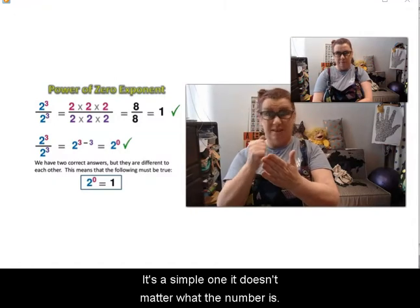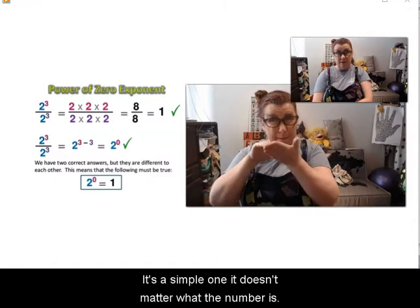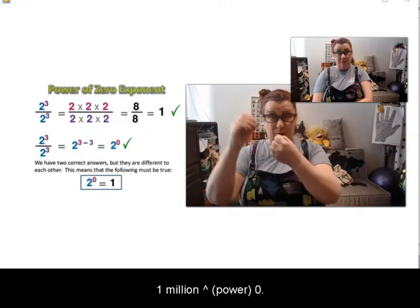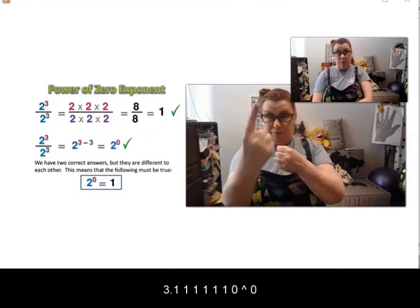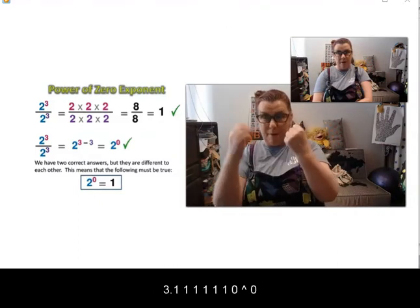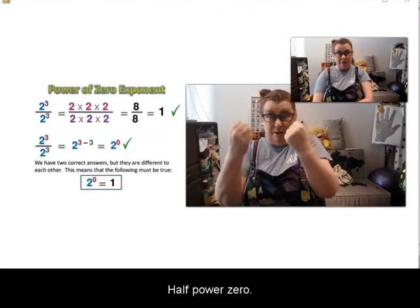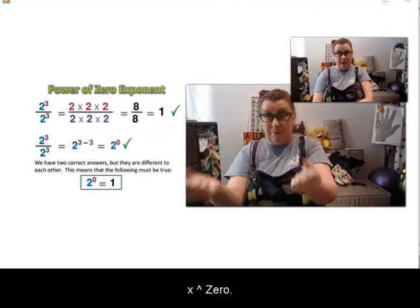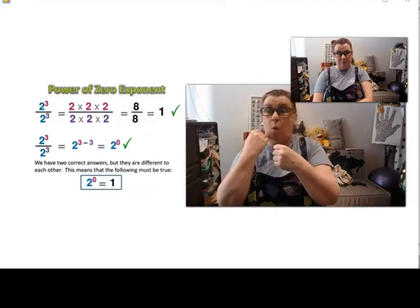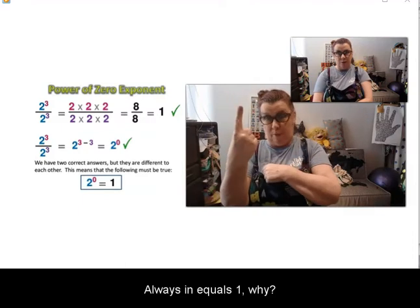Well, it's a simple one. It doesn't matter what the number is. 1 million power of zero, 3.111111 power zero, half power zero, x power zero. Always it equals 1.